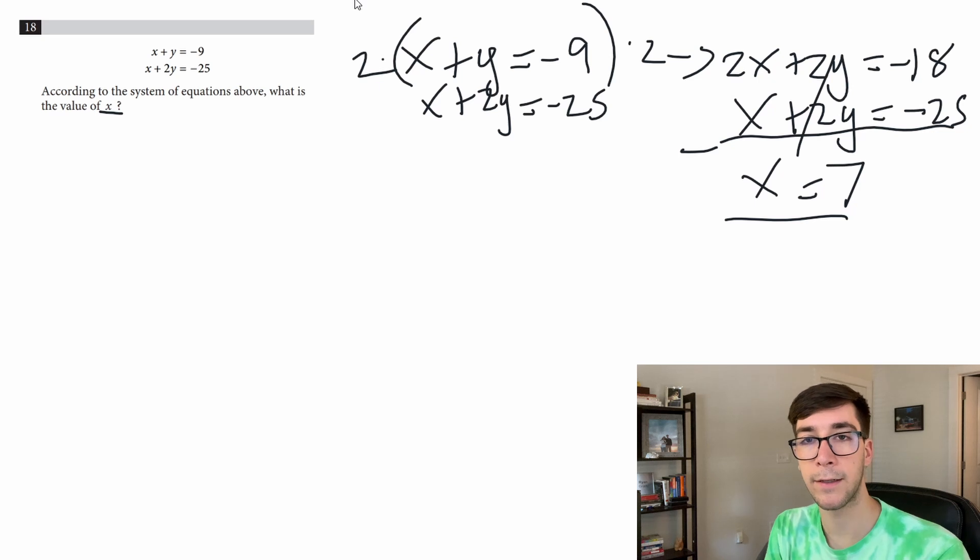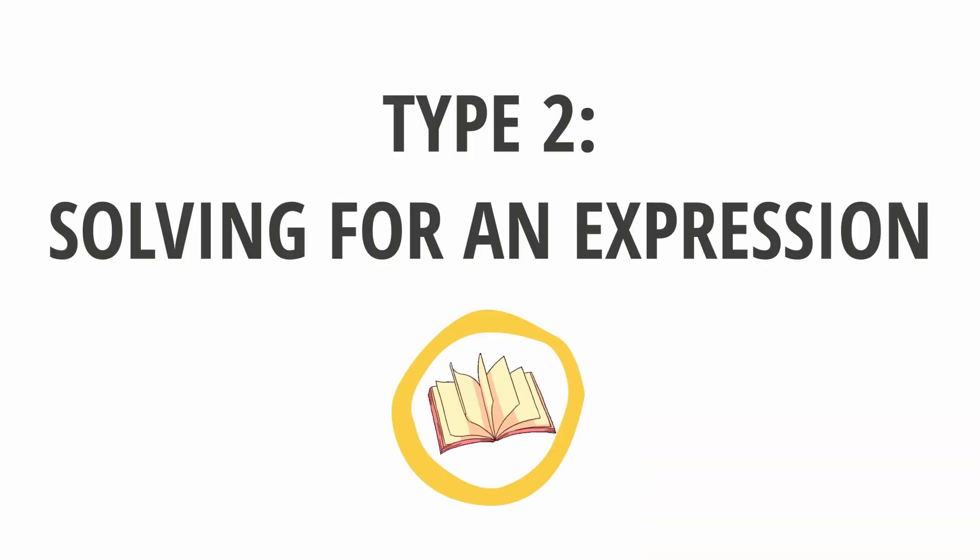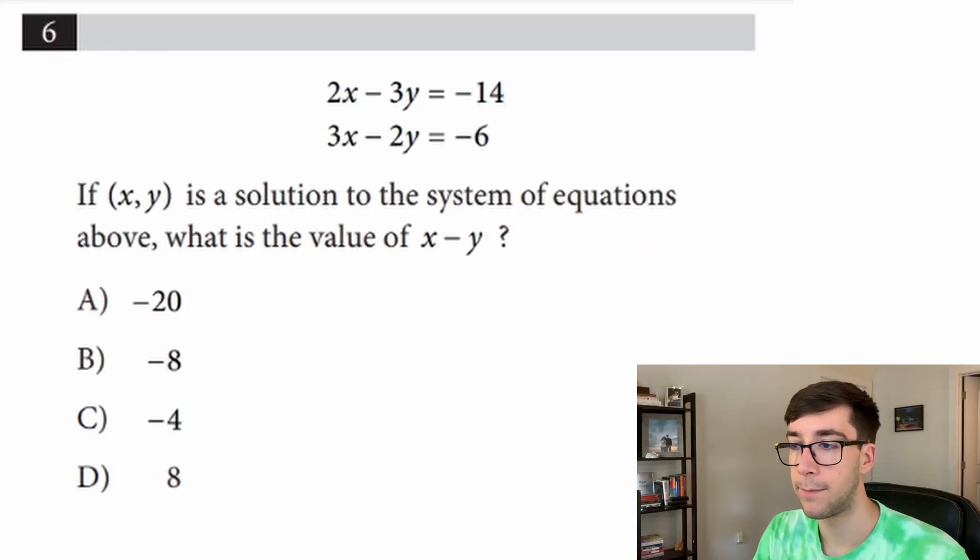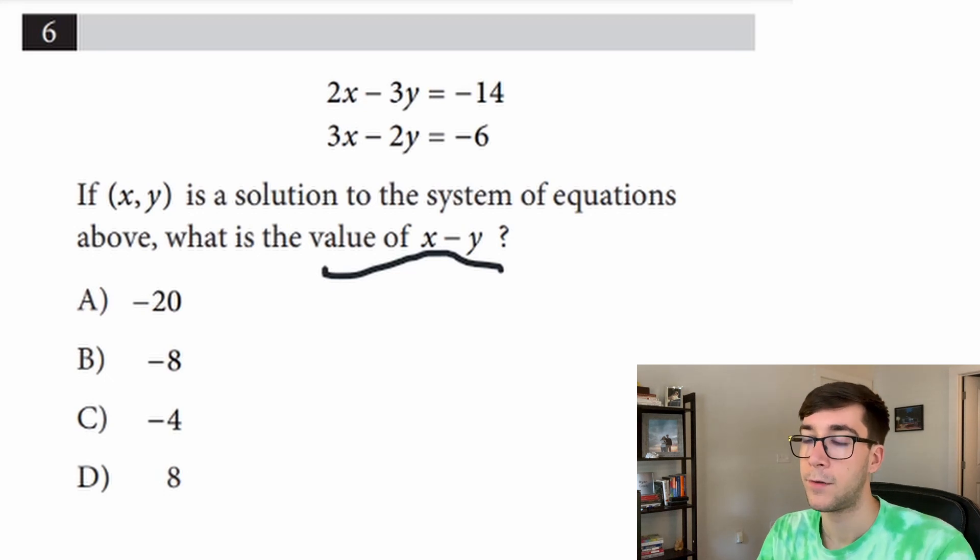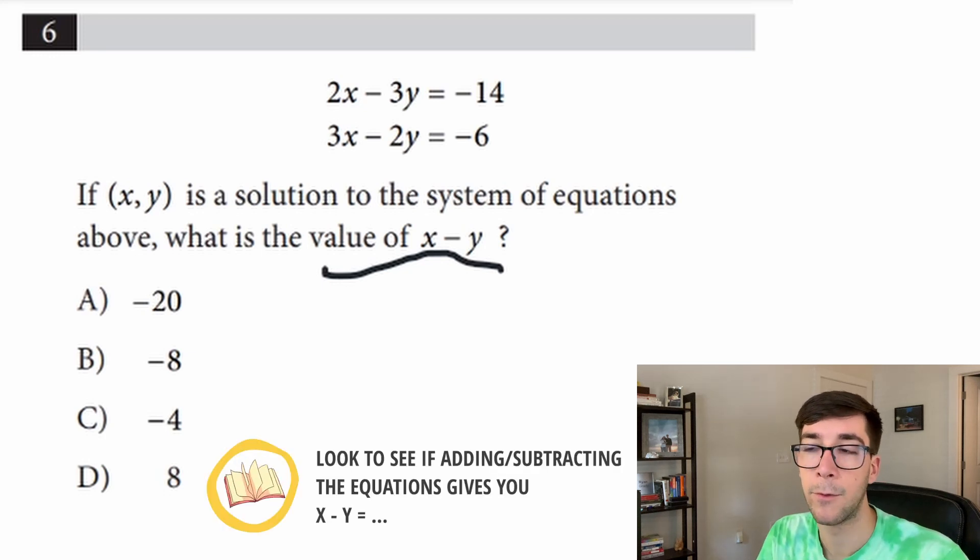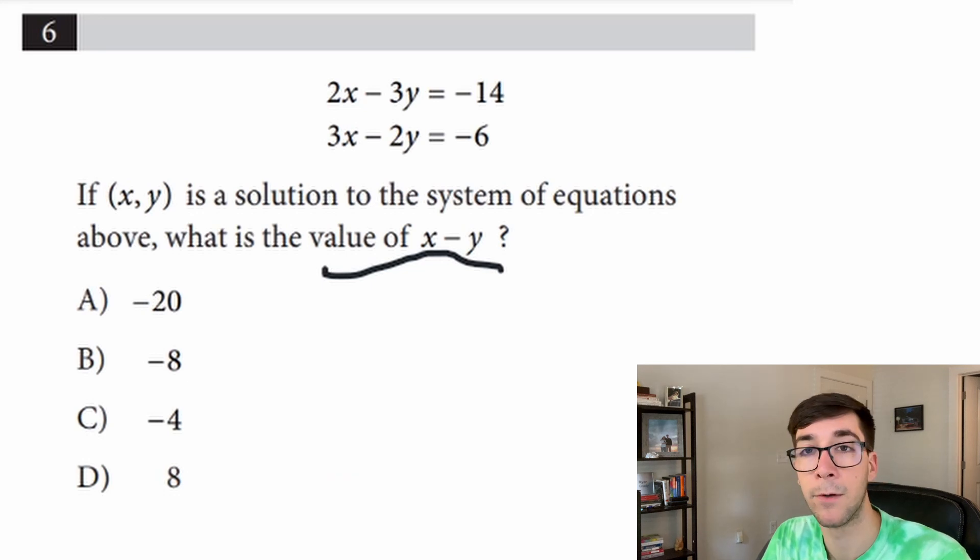Let's move on to the next type of systems problem. The second type of system problem is where you're solving for an expression. So if we look here at the bottom we're looking for the value of x minus y, so not just one variable. So with these, before you do anything you should look at the equations and see if you could add or subtract them to directly get this. This one I looked at it before, you can't, but sometimes if you add the x's and y's they just immediately form this and it just cuts out the problem so always look for that.